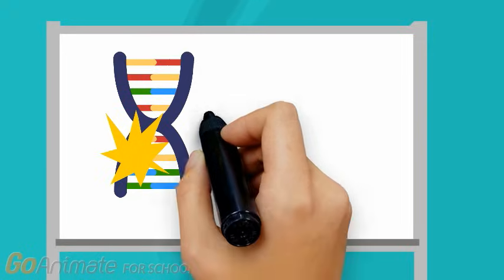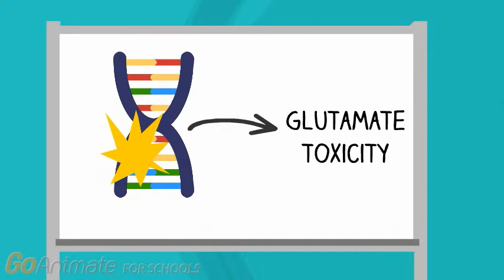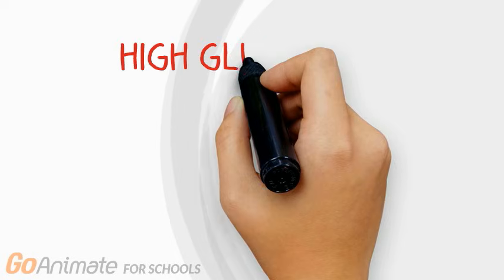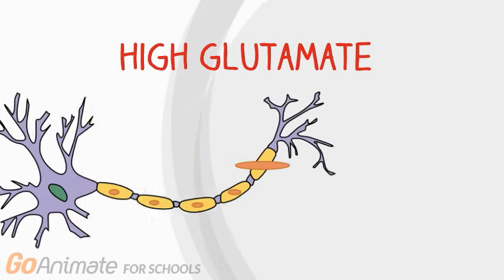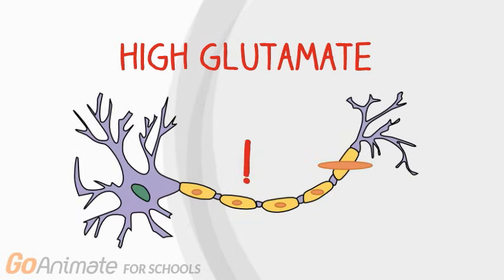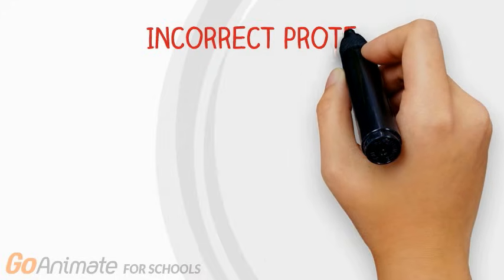Another possible explanation involves a mutation that can lead to glutamate toxicity. Glutamate is a powerful excitatory neurotransmitter that is released from the brain and can be found in high concentrations near neurons of individuals with ALS. Excessive exposure to glutamate damages nerve cell structure and is seen as one of the reasons these cells tend to die in ALS.